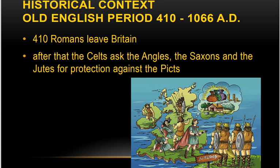Before 410, the land was ruled by Romans, who ruled all of Europe for 1,500 years. In 410, the Romans left Britain, and after that the Celts asked the Angles, the Saxons, and the Jutes — who were warriors from Germany — for protection. They came to protect the Celts, and later on they settled down and became natives as well.